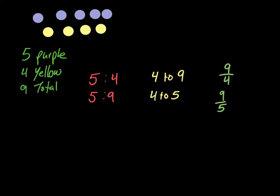You can have 5 purple to 4 yellow. You can have 5 purple to 9 total. You can have 4 yellow to 9 total. You can have 4 yellow to 5 purple. You can have 9 total to 4 yellow or 9 total to 5 purple. Lots of different ways you can arrange it. These are just a few examples.